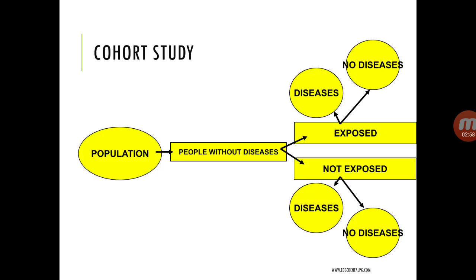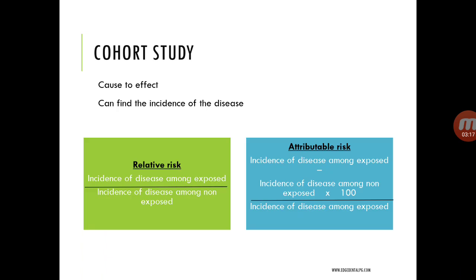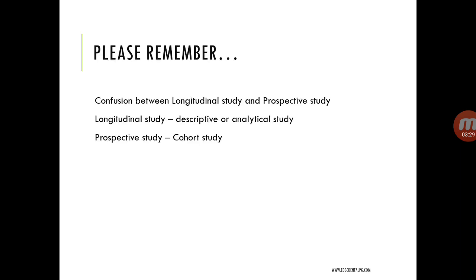Moving on to the cohort study: it is referred to as the prospective or forward-looking study. The study starts with a healthy population, which then gets divided based on exposure and progresses to people with disease and people without disease. Only the cohort study can be used to find the incidence of the disease. The two main calculations done with cohort study are relative risk and attributable risk. Do not confuse longitudinal study with prospective study — longitudinal study can be done in both descriptive and analytical epidemiology, whereas prospective study refers only to cohort study.